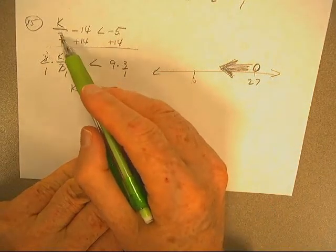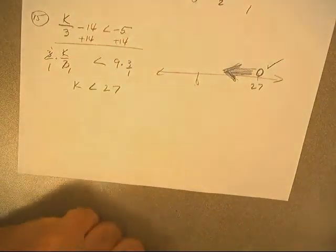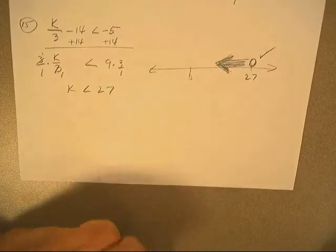Let's try it. 0 over 3 is 0, negative 14 is smaller than negative 5. Ding, it all checked. We did a spot check on it, we'll be back.